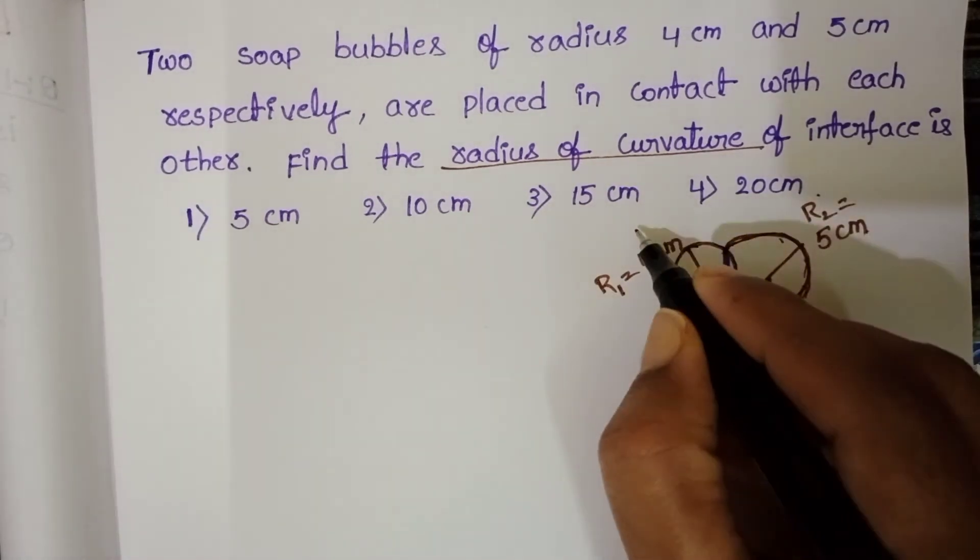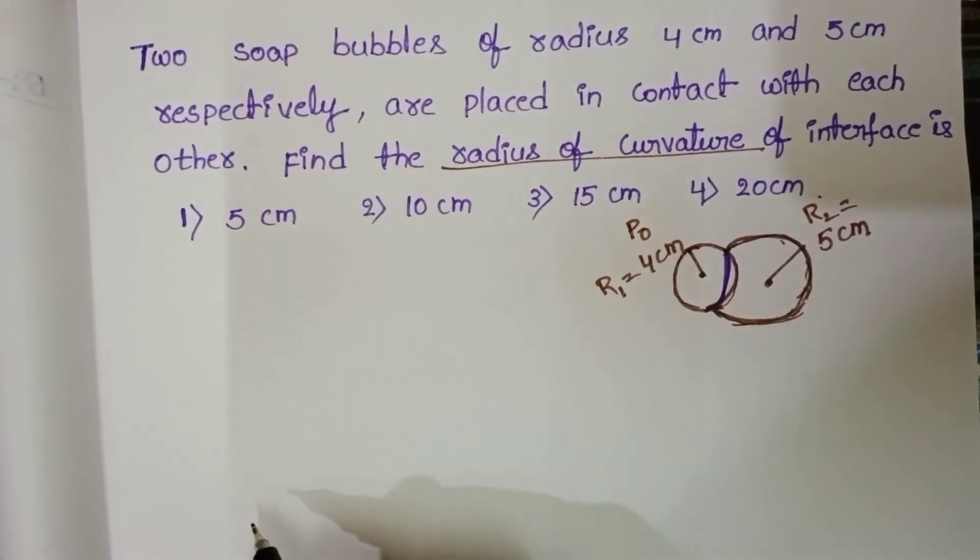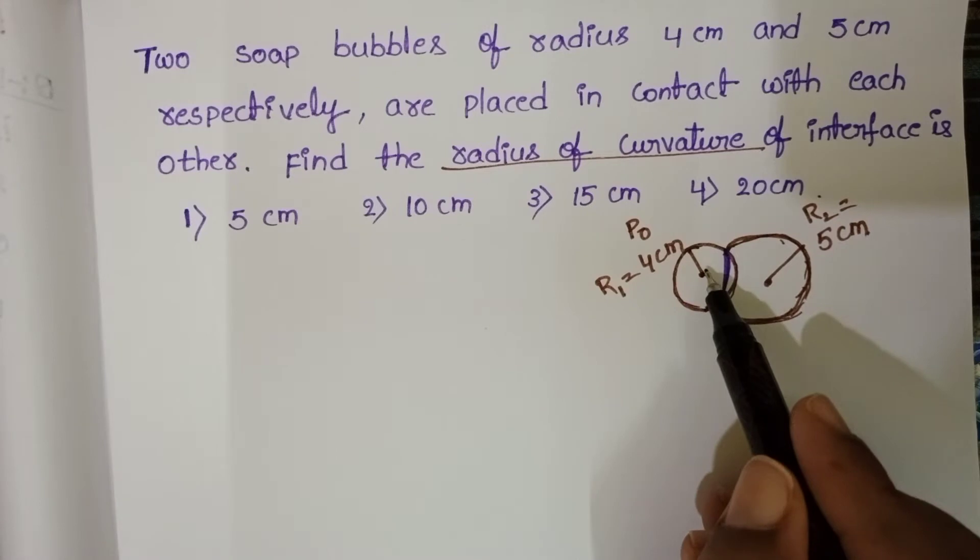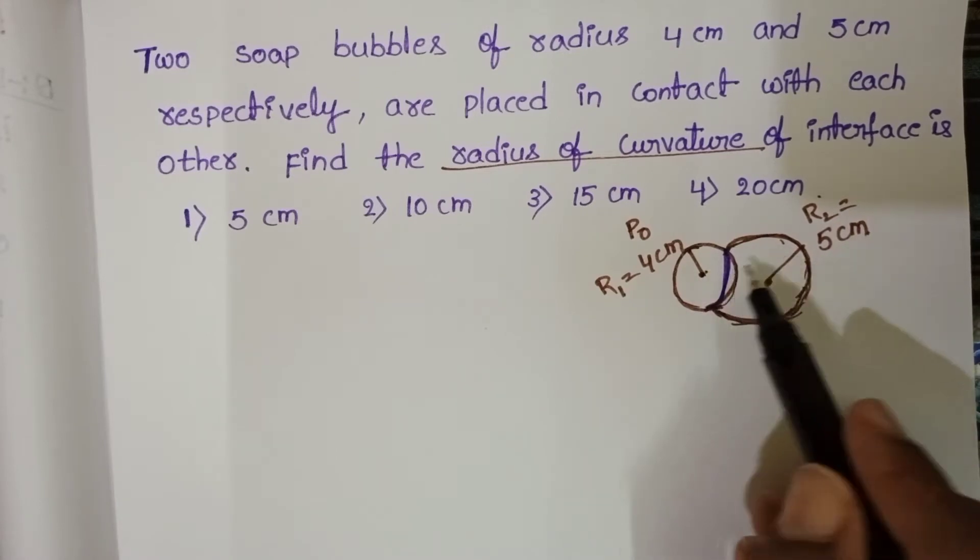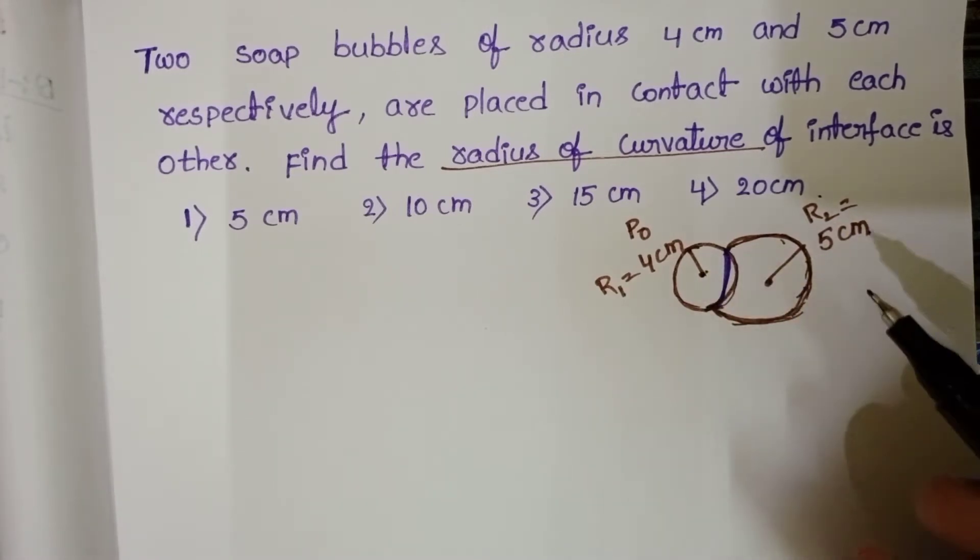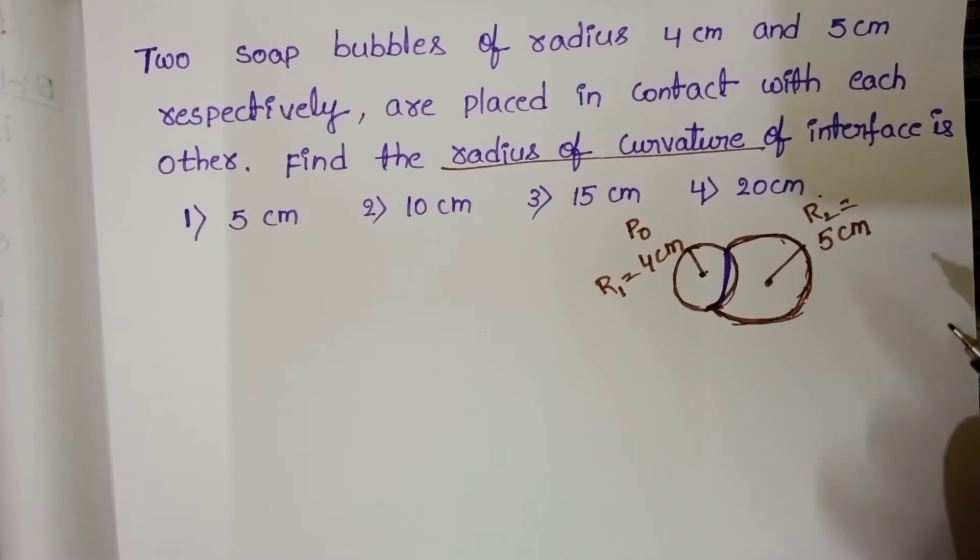Atmospheric pressure let it be P0. First bubble radius is less than the second bubble. So when radius is less, it exerts more pressure.